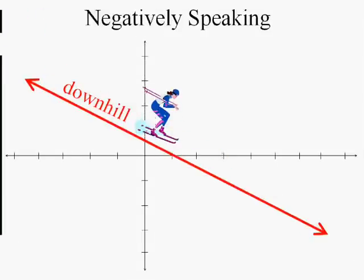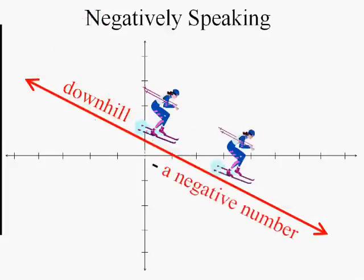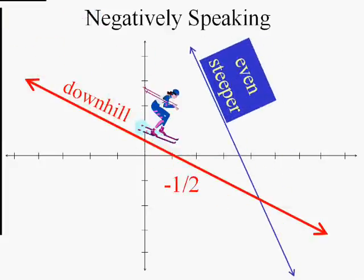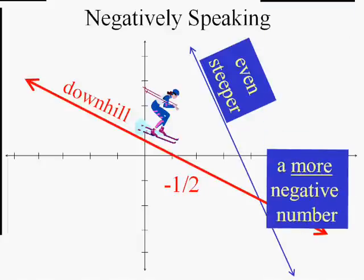Whereas if we looked at this line and tried to walk from left to right, we'd still be going downhill — that would be a negative slope. In fact, it would be negative one-half. This line would have a slope that's even more negative, and it, in fact, is negative three. That's a more negative slope.